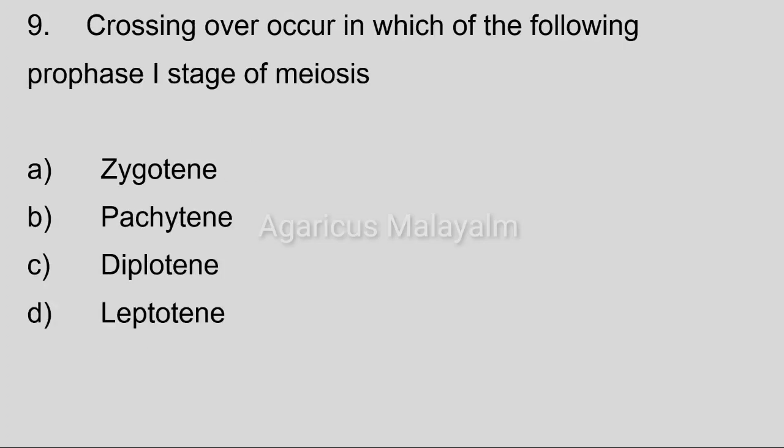Ninth question. Crossing over occurs in which of the following prophase stage of meiosis? Option A, zygotene. Option B, pachytene. Option C, diplotene. Option D, leptotene. Correct answer: Option B, pachytene.